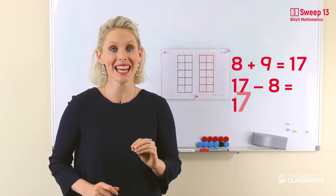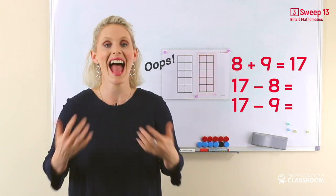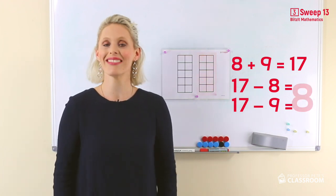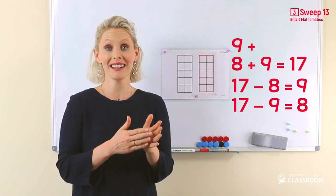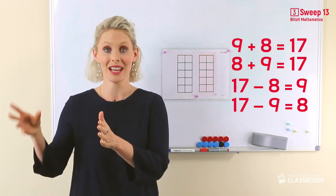Therefore, 17 take away nine has to equal... That's it. Eight. I know that because nine add eight equals 17. And eight add nine equals 17.